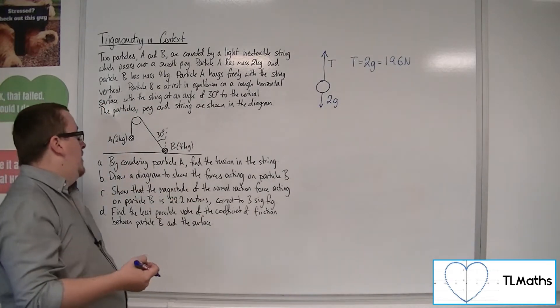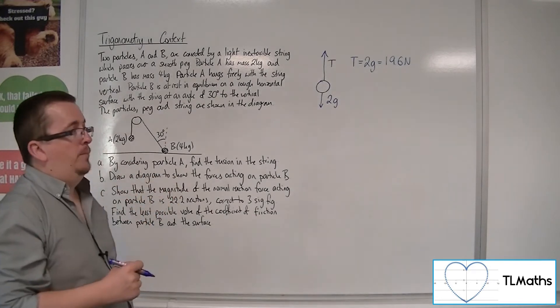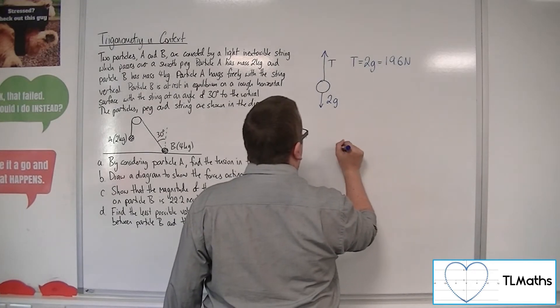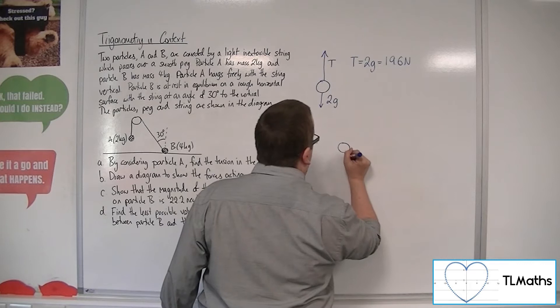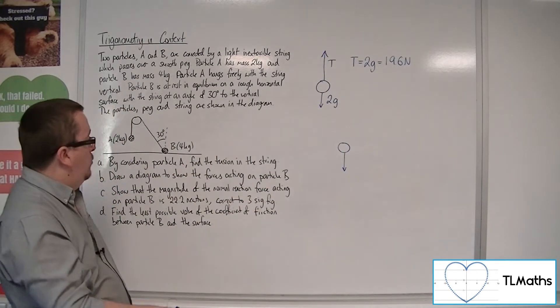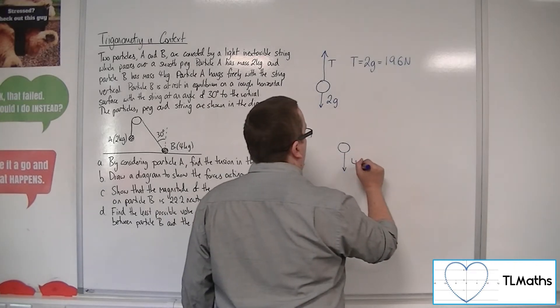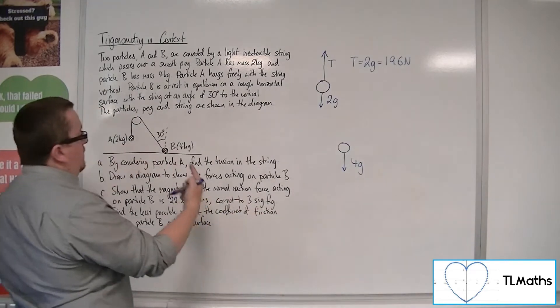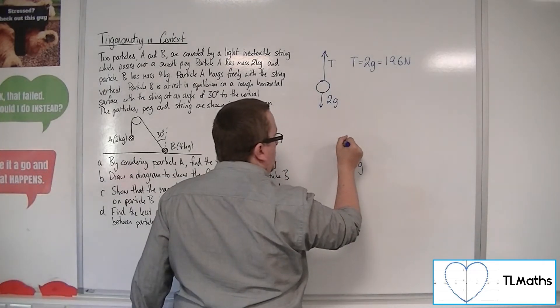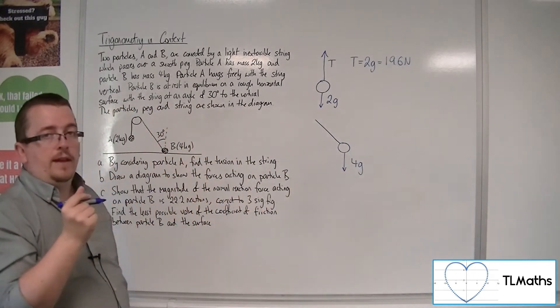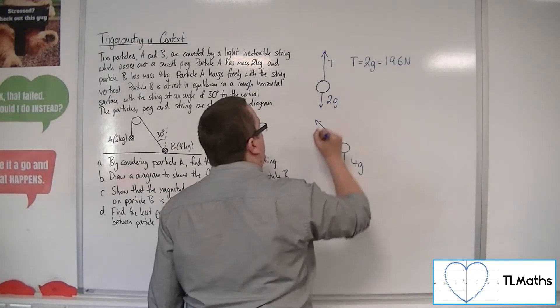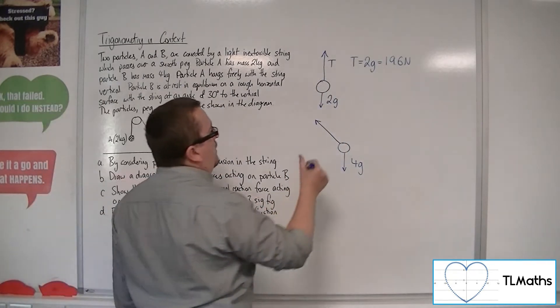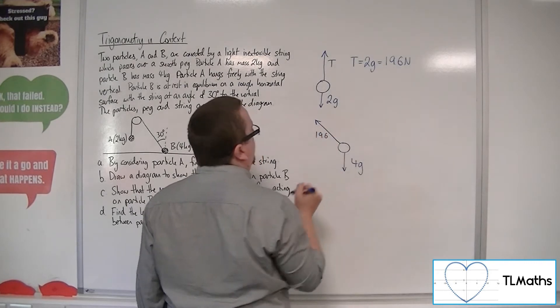Part B, draw a diagram to show the forces acting on particle B. Okay, so now we're going to zoom in on particle B. So here's particle B. It also has Mg acting downwards through the ground, and so that will be 4g. Now, it's got this string pulling against it. Now the tension in that string will be of the same magnitude as the tension there in order for the system to be in equilibrium. So that must also be 19.6 newtons.